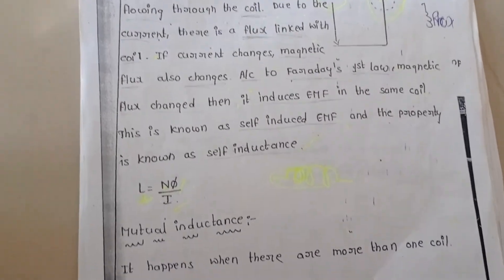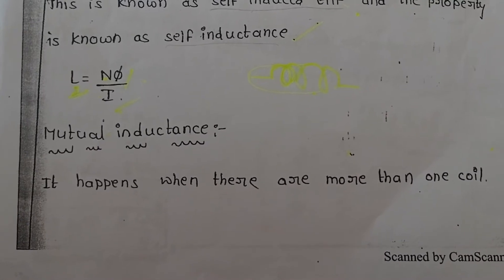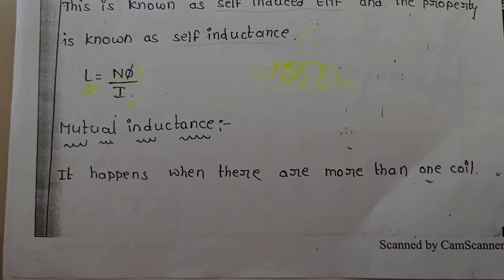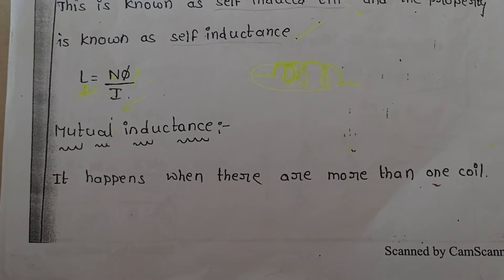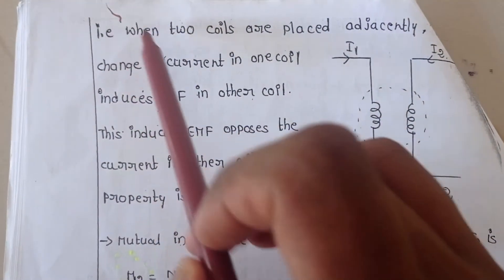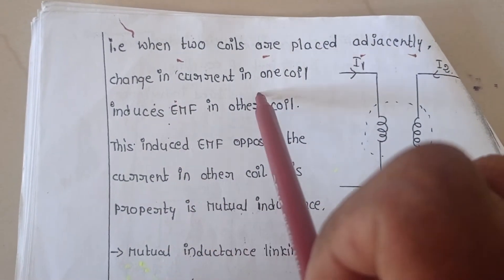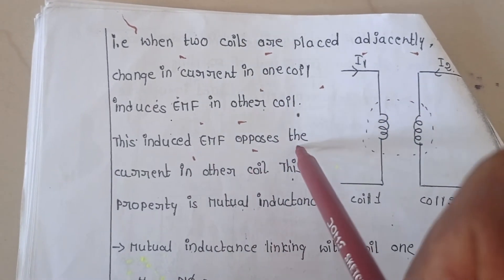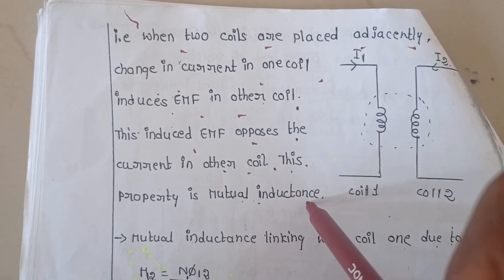Now let's see what is mutual inductance. Mutual inductance happens when there are two or more coils placed adjacently. When two coils are placed adjacently, a change in current in one coil induces EMF in the other coil. This induced EMF opposes the current in the other coil. This property is called mutual inductance.